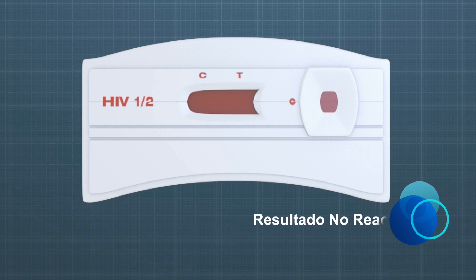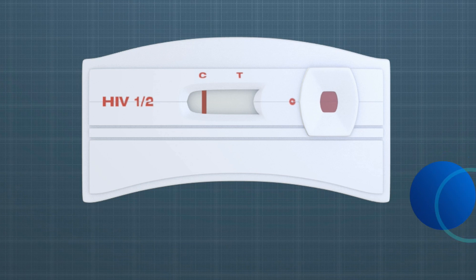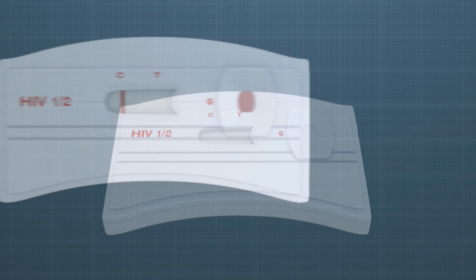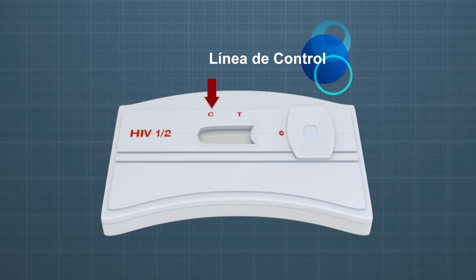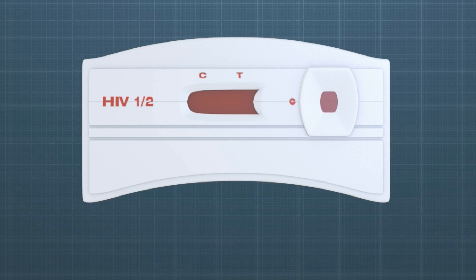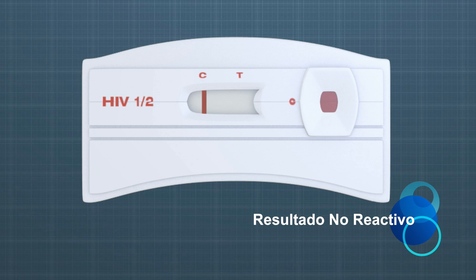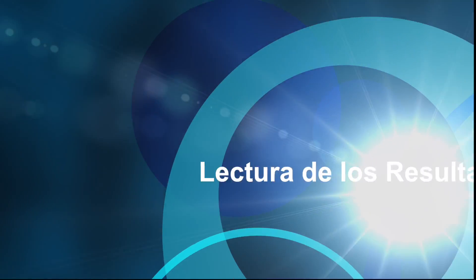En caso de no estar presentes los anticuerpos, no se observará ninguna línea. No debe aparecer ninguna línea en el sitio de los resultados o del control antes de aplicar la muestra. La línea de control es para asegurar que el procedimiento se ha realizado correctamente; solo demuestra que los reactivos son funcionales y que ha sido colocada la muestra.